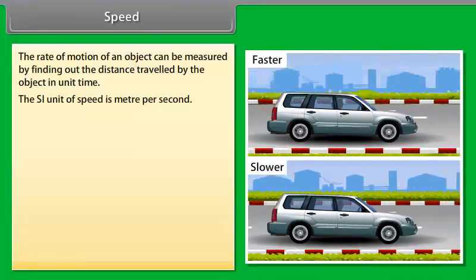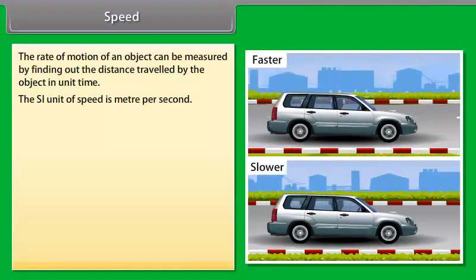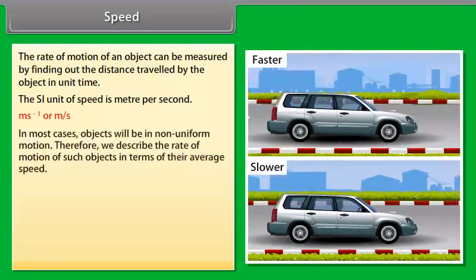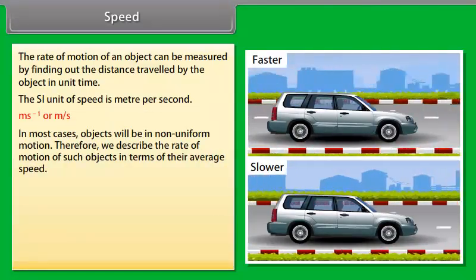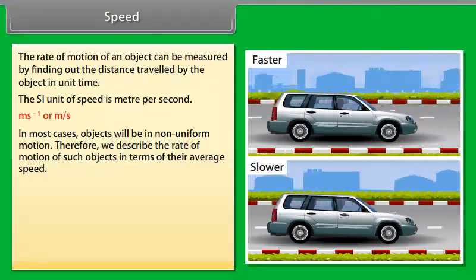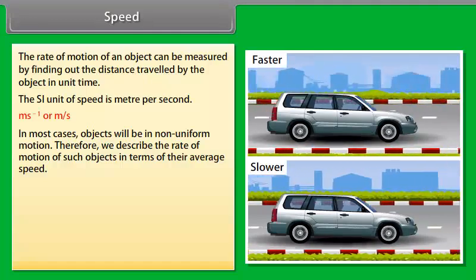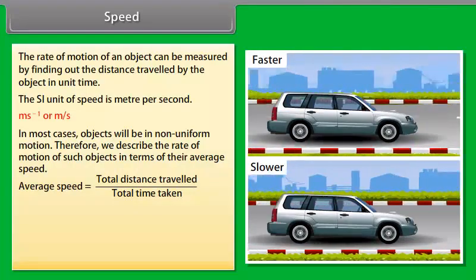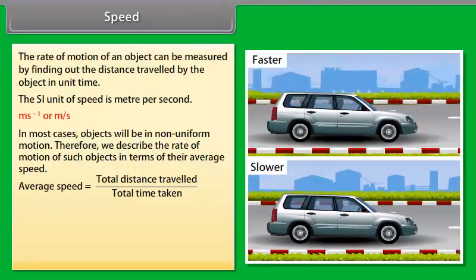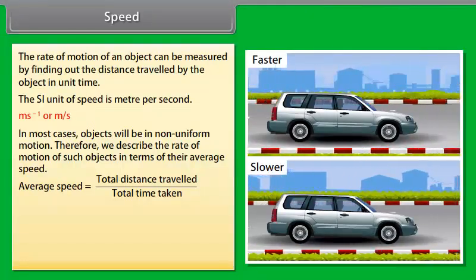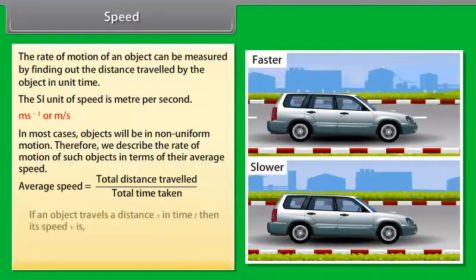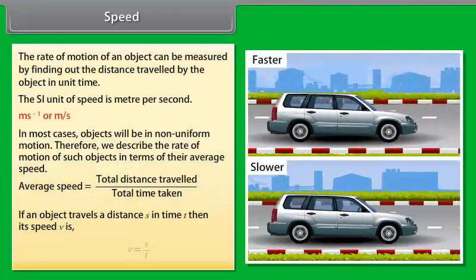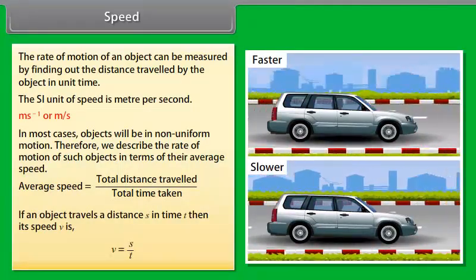The SI unit of speed is meter per second. In most cases, objects will be in non-uniform motion, so we describe their rate of motion in terms of average speed. The average speed of an object is obtained by dividing the total distance traveled by the total time taken. If an object travels a distance S in time T, then its speed V is V = S / T.